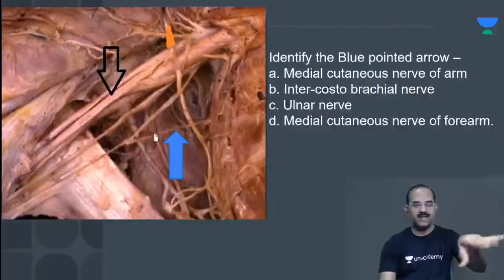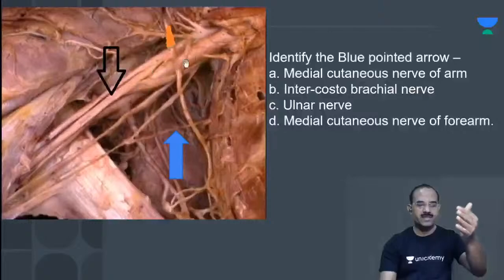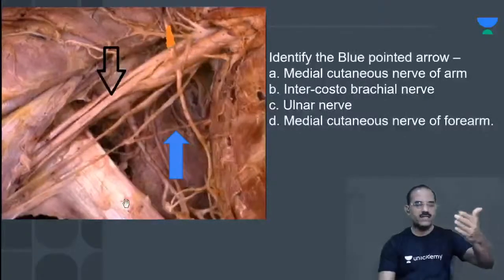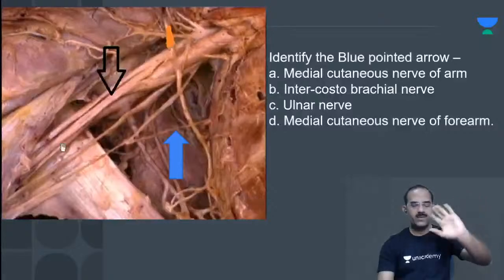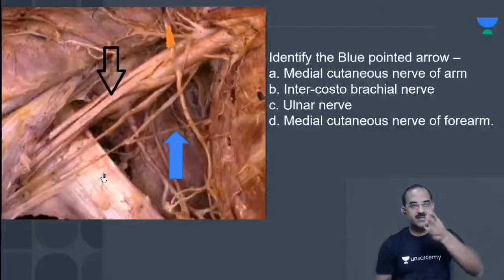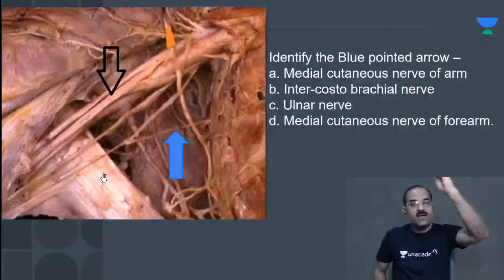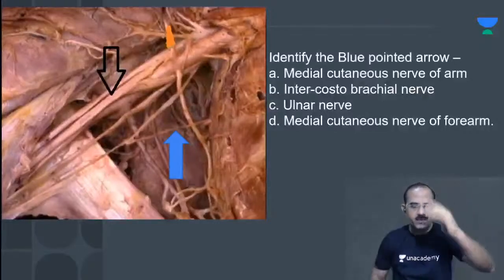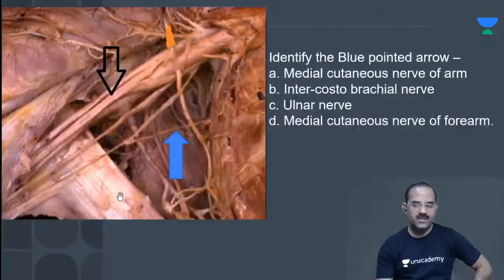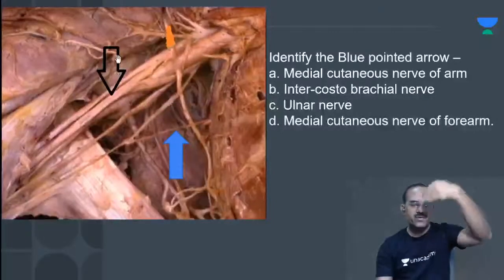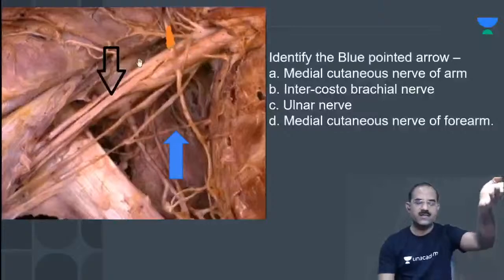This is the axilla. This is the brachial plexus and that's the axillary artery. What is this shiny tendon? It is shiny because it becomes very flat and gets inserted into the floor of the bicipital groove. Pectoralis minor has been reflected, which is why you can see this artery.